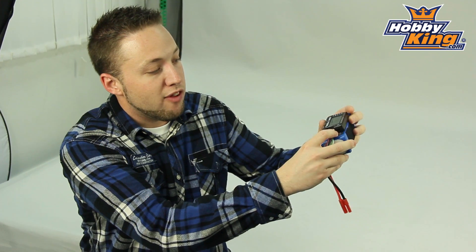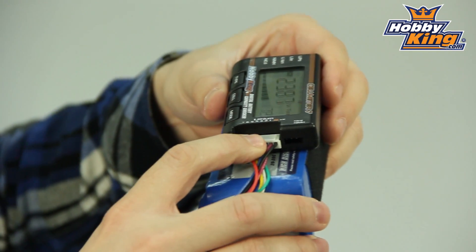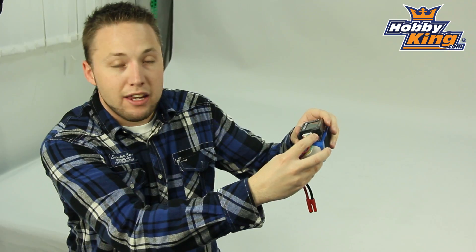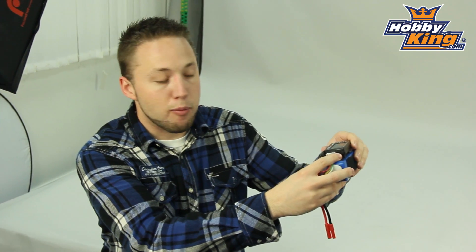As I mentioned, it'll handle up to 7 cell lithium. So you'll see your 7 cell balance tab here on the side. And also has a receiver style plug for your NiCad and nickel metal hydride. So you can use this easily to check your receiver packs.